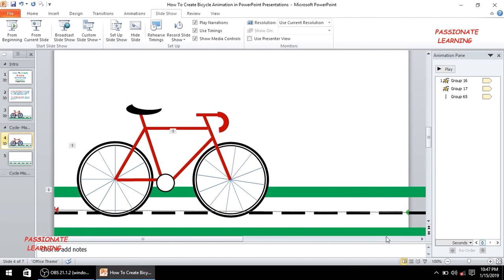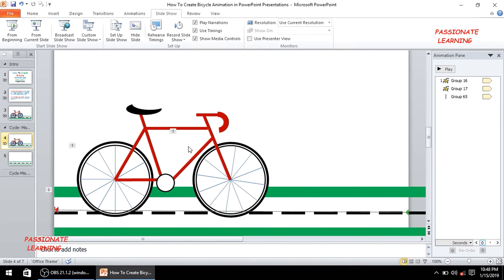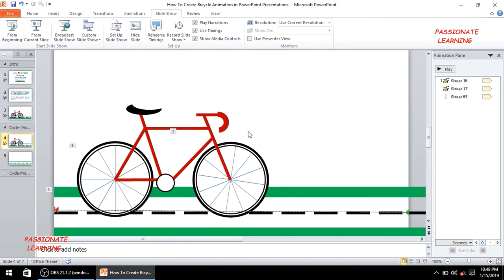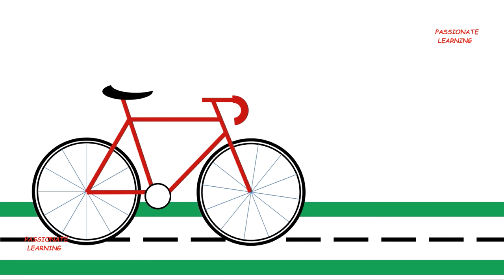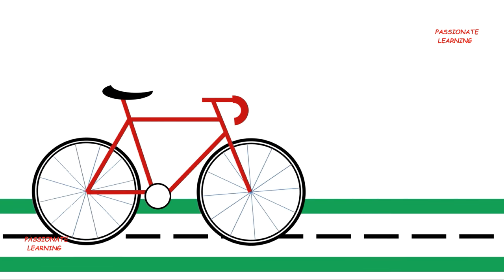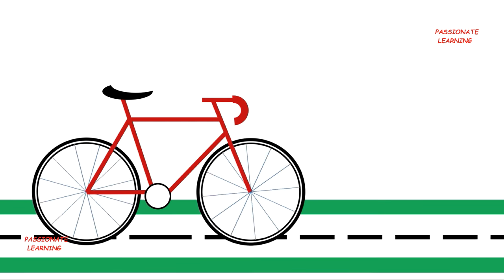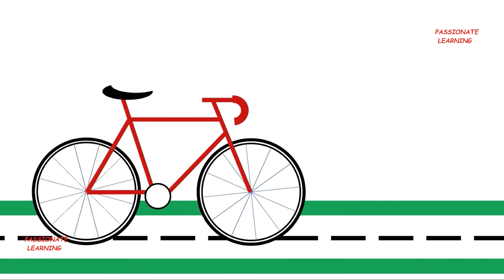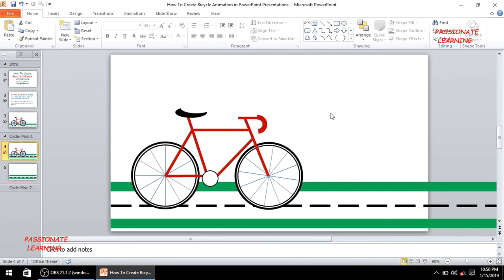After adding all animations, I'll make some minor modifications — extending a couple of lines on the cycle for a better appearance. I'll save the presentation with Ctrl+S and then play the slideshow from the current slide. We can see the beautiful bicycle animation playing in PowerPoint.